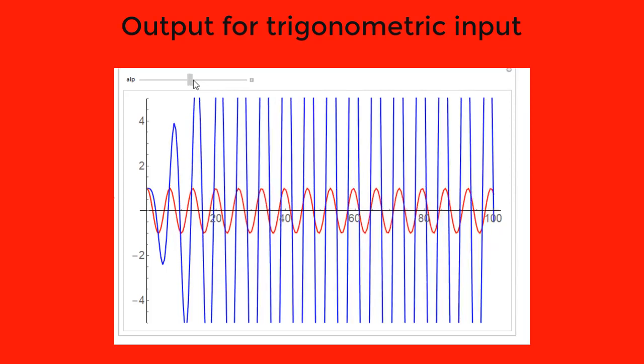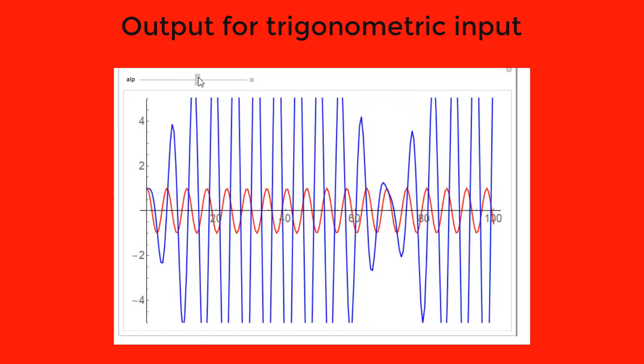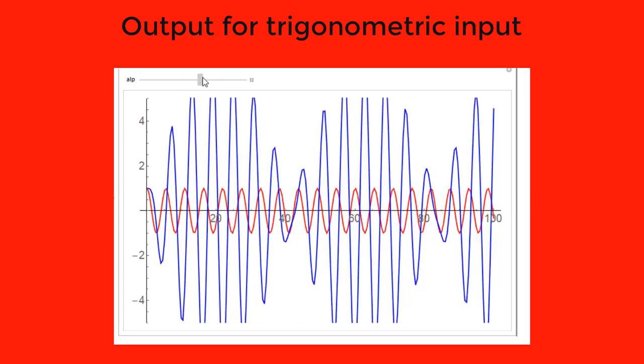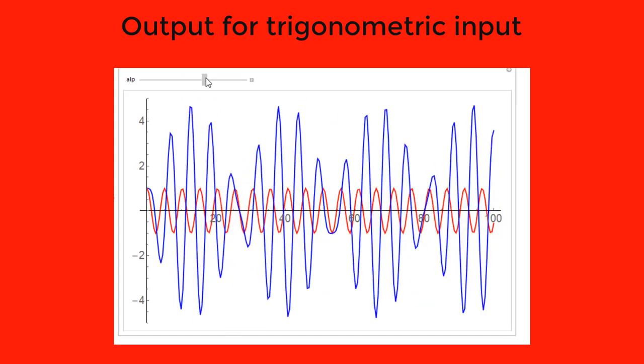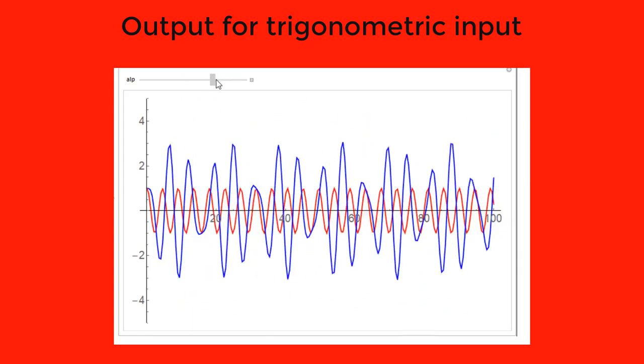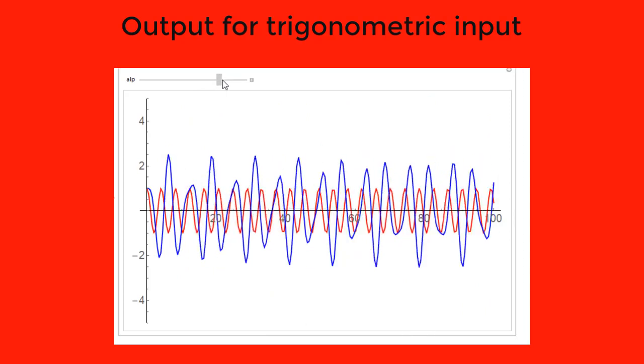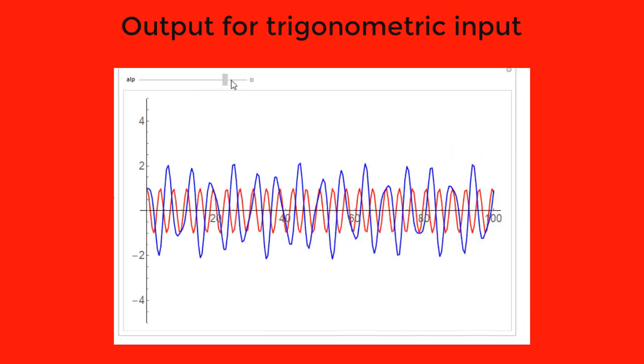If we go past the critical frequency, you can see now we go back through the beats phenomenon, where the amplitude gets larger and smaller, larger and smaller.